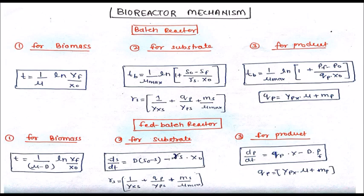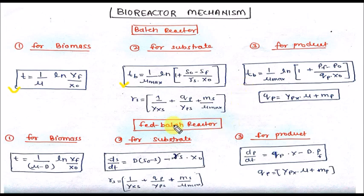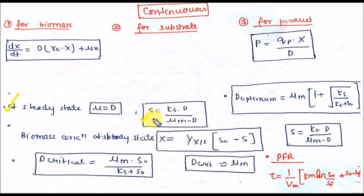Let's come to bioreactor mechanisms. In a batch reactor you can calculate batch time for biomass production, batch time for substrate consumption, and batch time for product formation. Similarly, you can calculate for fed-batch: time for biomass, substrate, or product with these formulas. Here you can see the substrate consumption formula and calculate biomass concentration at steady state.